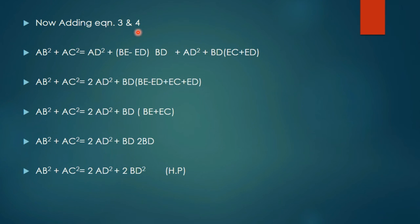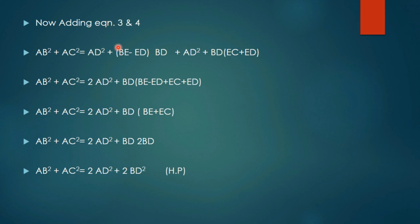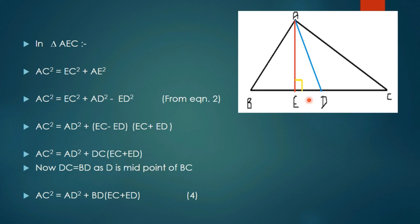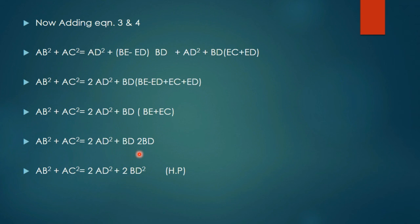Now adding equation 3 and equation 4, we get AB square plus AC square. AD square plus AD square gives twice AD square. Taking BD as common, the ED terms cancel and we remain with BE plus EC, which is the complete BC. We can write BC as twice BD, giving twice BD square. Therefore AB square plus AC square equals twice AD square plus twice BD square, which is the left-hand side of Apollonius theorem. Hence proved.